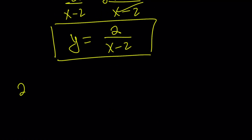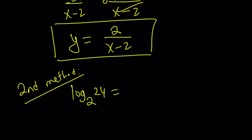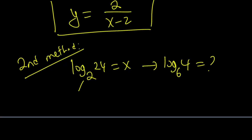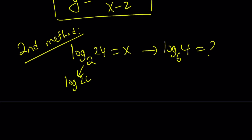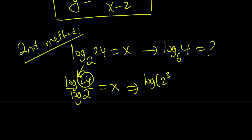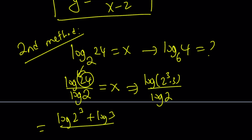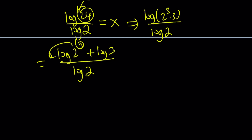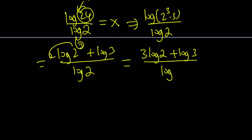Let's look at the second method. The original expression log 24 with base 2 is given as x, and we're supposed to evaluate log 4 with base 6 in terms of x. I'm going to use the change of base formula and write this as log 24 over log 2 — using base 10, though any base works. We break down 24 into 2 to the 3rd times 3, and by properties of logs this becomes (3 log 2 plus log 3) over log 2, which equals x.